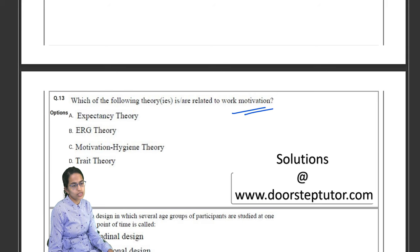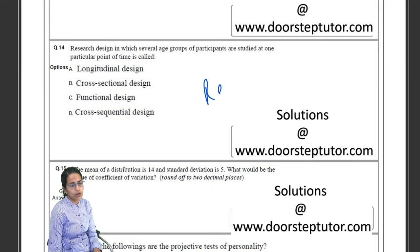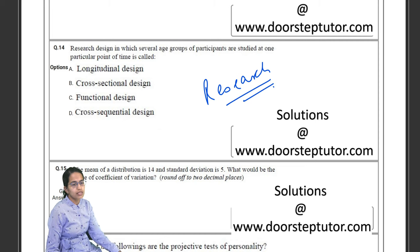Then Erikson's psychosocial development theories, Freud's psychosexual development theories are important. Theories related to work motivation - now all the theories related to work motivation are important, the basis behind those. Then this is a question from research methodology, what kind of design is used under various means.